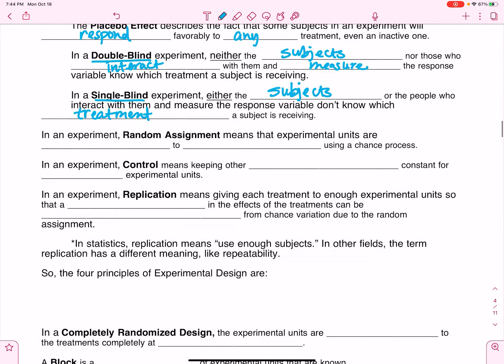When we look at an experiment, one of the things you need to remember is that random assignment, this is not like random sampling in surveys. This is random assignment. Random assignment means that our experimental units are going to be assigned to treatments. And it's very important that you understand that this has to be by a chance process. There's no choice involved here.